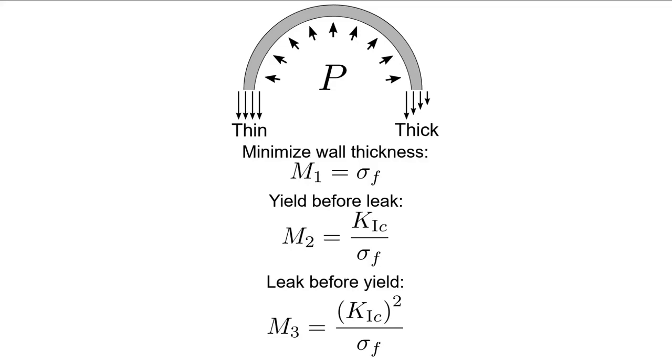There are design rationales behind each of these. For some pressure vessels, leaking will rapidly decrease the internal pressure and therefore be less deleterious than failing by global plasticity. However, if the consequence of a leak will be worse than the vessel failing by plasticity, well, you get the idea. However, with our performance indices, we can actually apply all three at once.